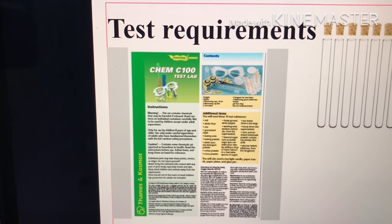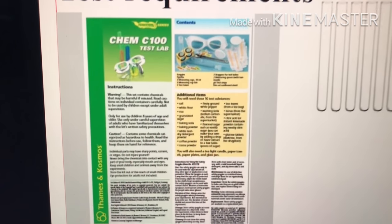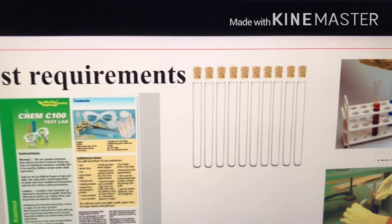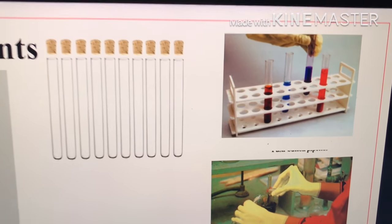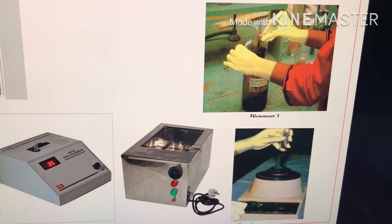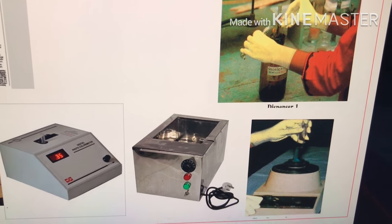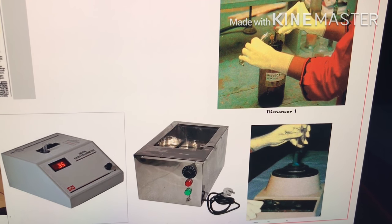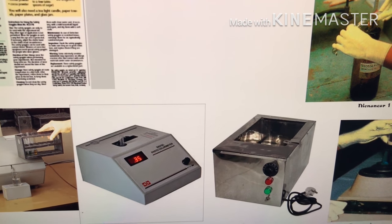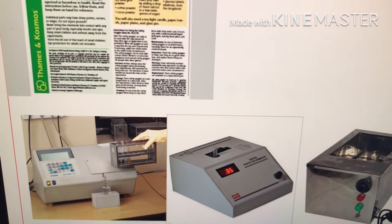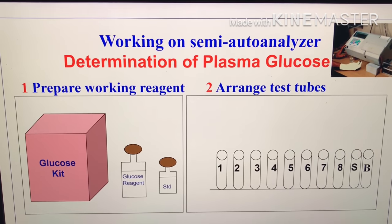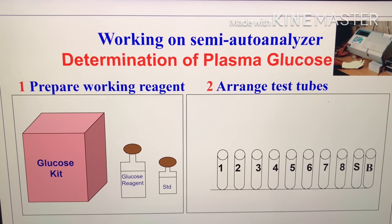First, find out the test requirements from the kit literature. For glucose determination, these are the requirements: test tubes, test tube stand, a dispenser to dispense reagent, and a mixer to mix the reagent and specimen, standard, or blank, an incubator for 37-degree temperature, and then for readings either a photometer or semi-auto analyzer. Now let us see how to use the glucose kit for plasma glucose determination.